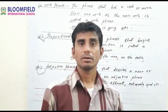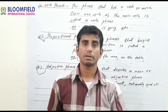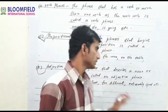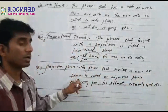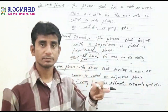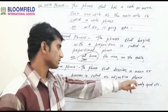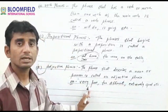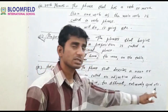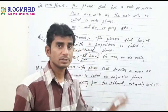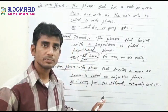Next, adjective phrases. If you are facing any problem, just go to my comment box and you can leave some advice. Now, adjective phrases: the phrase that describes a noun or a pronoun is called an adjective phrase. Examples: very poor, too difficult, extremely good, etc. These are the examples of adjective phrases.